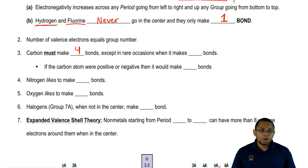But there are rare occasions where it doesn't make four bonds. In those rare occasions, it's going to make three bonds. If the carbon atom were positive or negative, then it would make three bonds.